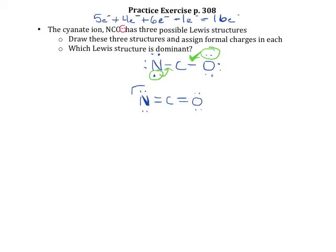I need to make sure to put it in brackets with a charge on the outside. We know there are three possible Lewis structures, so I'm going to draw the resonance structures — three different ways to draw the same structure — and think about where else the electrons could go.